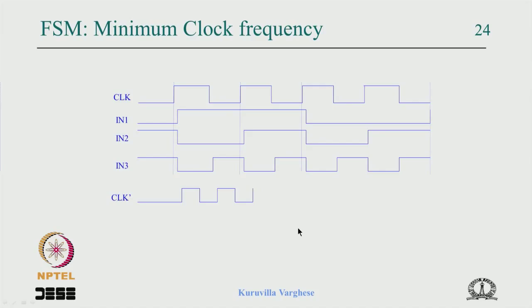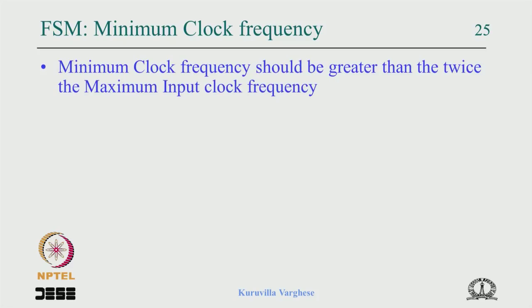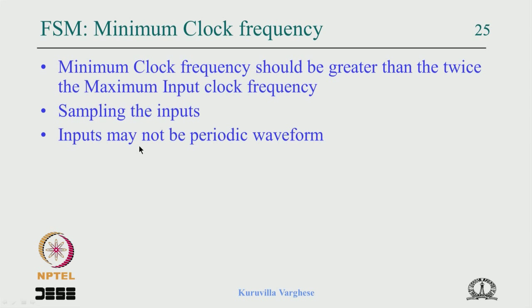The maximum clock frequency of the FSM must be greater than twice the maximum input clock frequency. This is analogous to the Nyquist criterion: to sample a signal you must sample at twice the highest frequency so you can recover it. Something similar happens here because we are sampling the inputs, albeit in the digital domain with binary signals rather than analog signals.